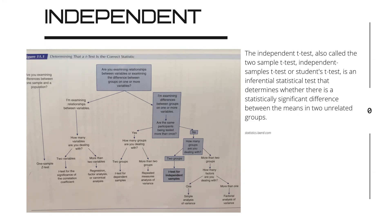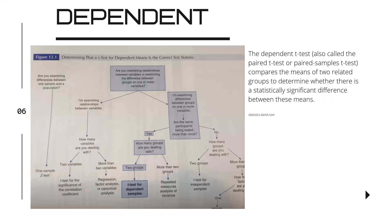Our next question is: are the same participants being tested more than once? We're going to say no. How many groups are you dealing with? We're dealing with two groups. That is how we know we are testing for independent samples. And we're going to move on to dependent samples.